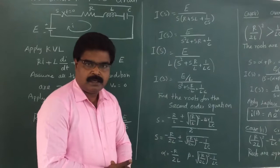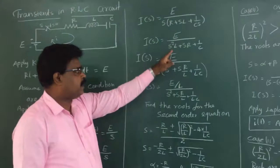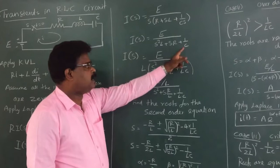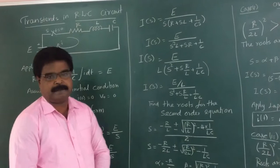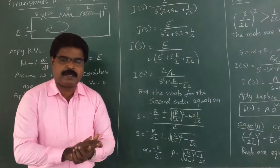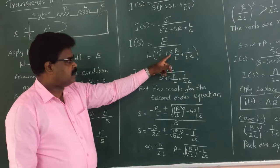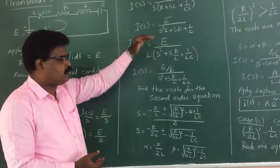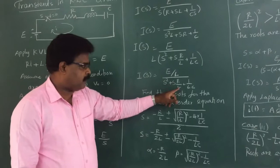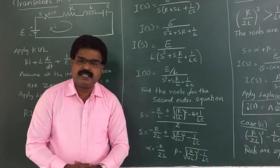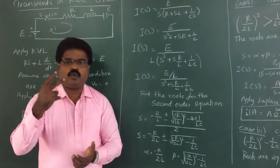Next, multiply the denominator by S. So I of S equals E divided by S²L plus S·R plus 1 by C. Taking L into the numerator, I of S equals E by L divided by S² plus S·R by L plus 1 by LC. The denominator is a second-order equation, so you have two roots. Next, calculate the roots for this second-order equation.